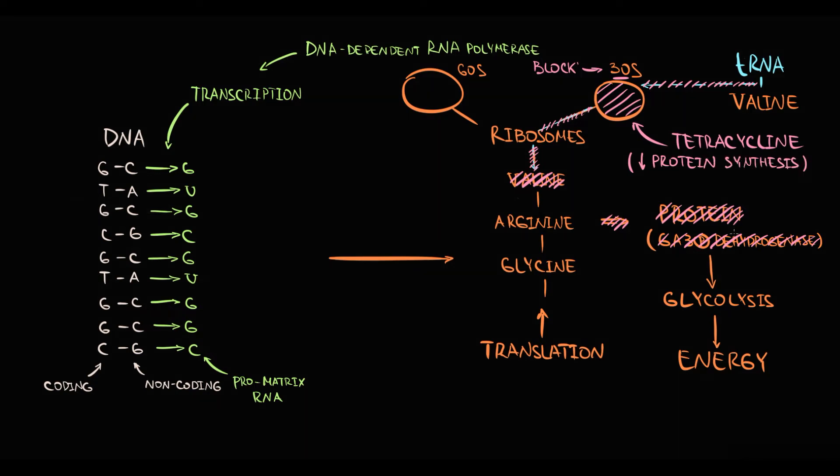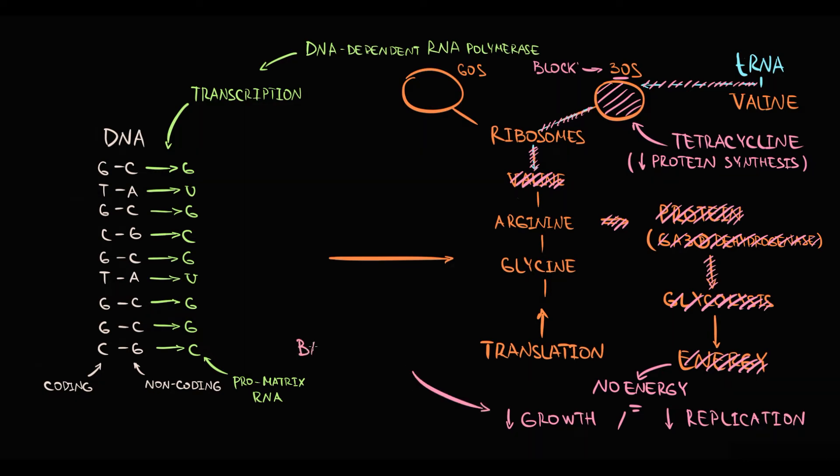So basically, tetracycline disrupts bacteria's ability to synthesize proteins. It can be any protein, but because we took a protein that participates in glycolysis, with inability to produce this protein, now glycolysis becomes impossible. Thereby bacteria will be unable to produce any energy, and energy deficiency disrupts bacteria's ability to grow or to further replicate. This type of impairment by tetracyclines makes them bacteriostatic.